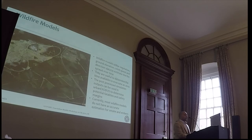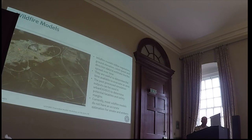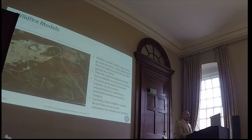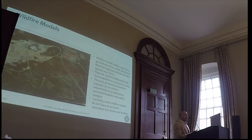Wildfire models utilize vegetation data, ground elevation, and wind speed and direction data to estimate the spread of fire over time. They are useful to determine the time available to evacuate an area. The fire has started in the forest — this is a simulated version of the Swinley Forest fire — and there is a certain amount of time available for the population to evacuate. Wildfire simulation tools are currently used in operations to determine the time it takes for a fire to reach a populated region. Currently most wildfire models don't have very accurate estimation of smoke and embers, but once available, Urban Exodus will integrate these.